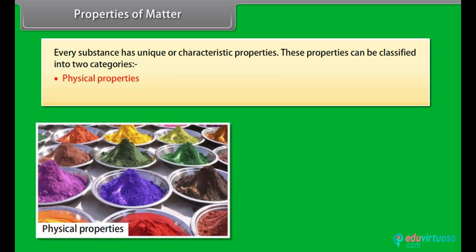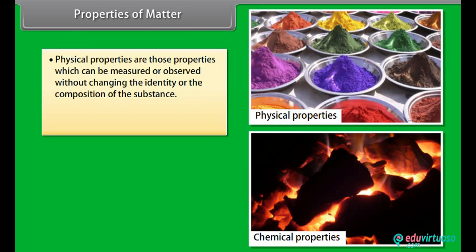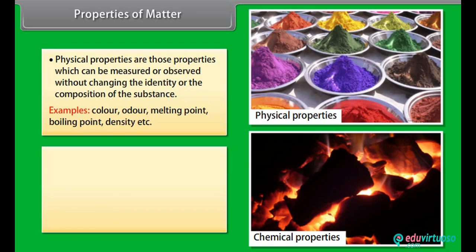Physical properties are those properties which can be measured or observed without changing the identity or the composition of the substance. Examples: Color, Odor, Melting point, Boiling point, Density, etc.